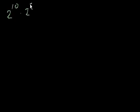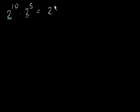Welcome to part 2 of the presentation on level 1 exponent rules. Let's start off by reviewing the rules we've learned already. If I had 2 to the 10th times 2 to the 5th, we learned that since we're multiplying exponents with the same base, we can add the exponents, so this equals 2 to the 15th.